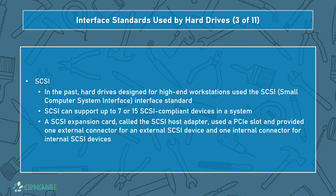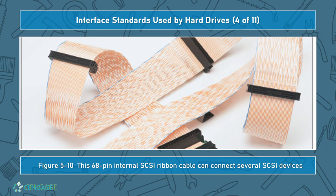SCSI — Small Computer System Interface — was also a hard drive interface that has now been deprecated, used for high-end workstations. It allowed what was called daisy chaining, supporting multiple devices in the same system using one cable connecting back to a single host adapter — up to 7 or even 15 SCSI-compliant devices. These are all one less than a power of two (8 or 16), allowing us to connect devices while retaining one interrupt for the control hub. Here we can see an internal SCSI ribbon cable with at least five connectors visible.